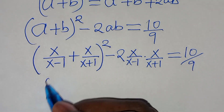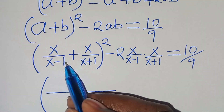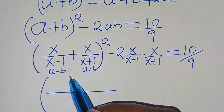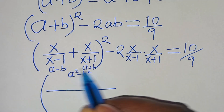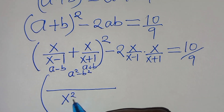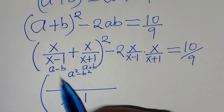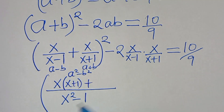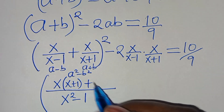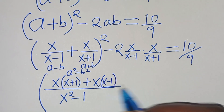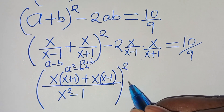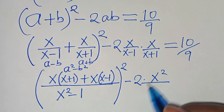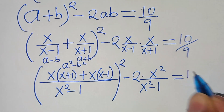The next step: the LCM here — x-1 is in the form a-b and x+1 is in the form a+b, so (a-b)(a+b) = a²-b², the difference of two perfect squares. So the LCM is x²-1. We get [x(x+1) + x(x-1)]/(x²-1) all squared, minus 2x²/(x²-1) = 10/9.